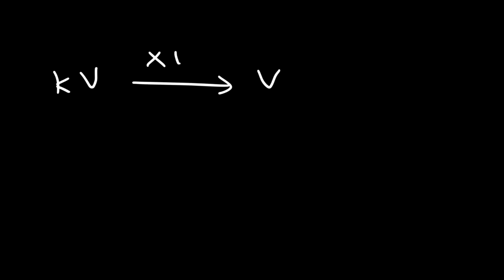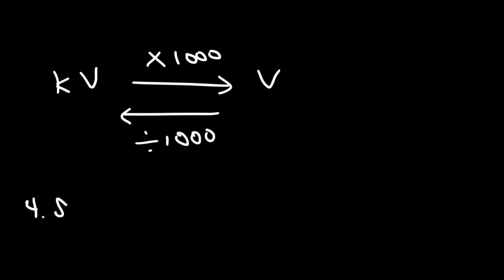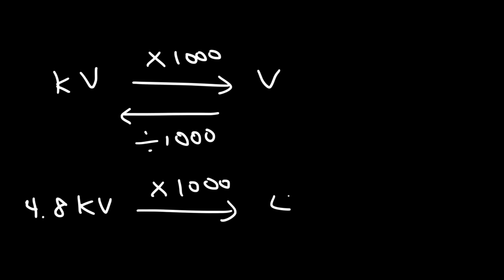To go from kilovolts to volts, multiply by 1000; from volts to kilovolts, divide by 1000. For example, 4.8 kilovolts multiplied by 1000 equals 4800 volts.